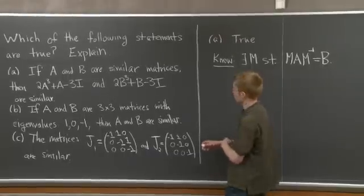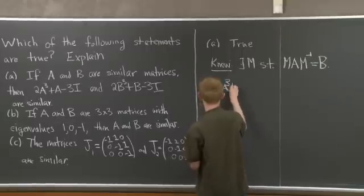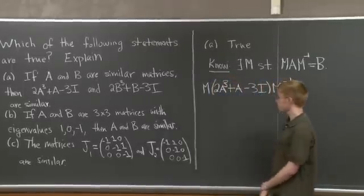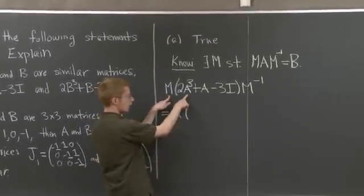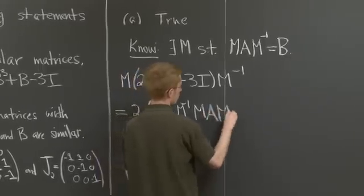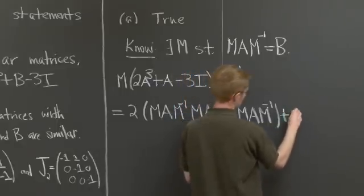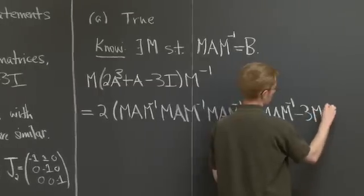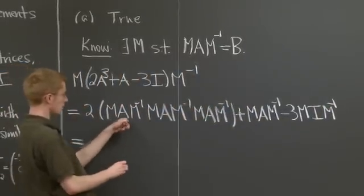So let's take that same matrix M and multiply it on the left and the right of 2A cubed plus A minus 3 times the identity. What do we get here? Well, the point is M times A cubed times M inverse, we can just write that as 3 M A M inverses.